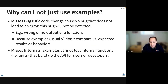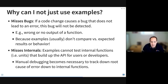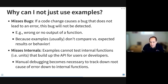Also, in examples you can't evaluate internal functions. A lot of internal machinery that goes into the package doesn't get tested at all through examples. That's why it's worth doing unit testing — manual debugging becomes necessary to track down the root of errors. If an example doesn't work, you don't necessarily know where the problem was and have to do extra work to figure that out.